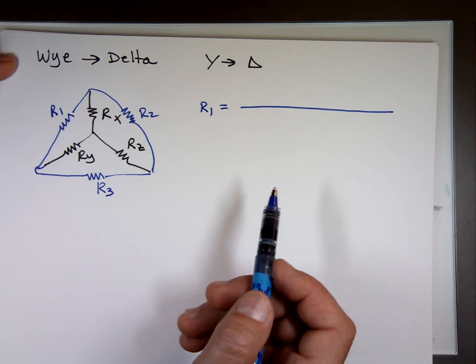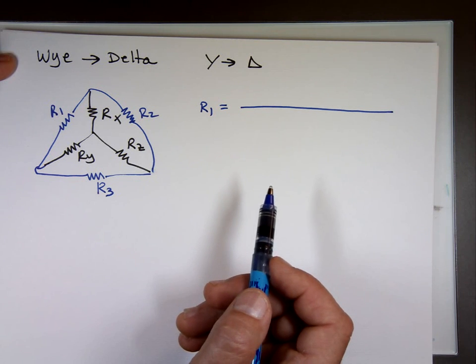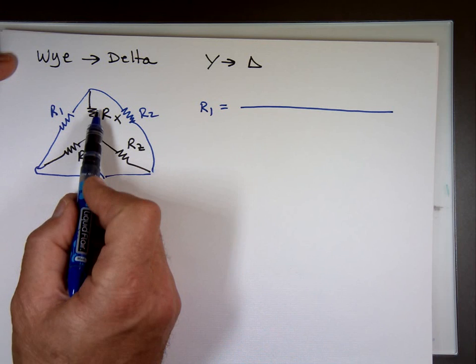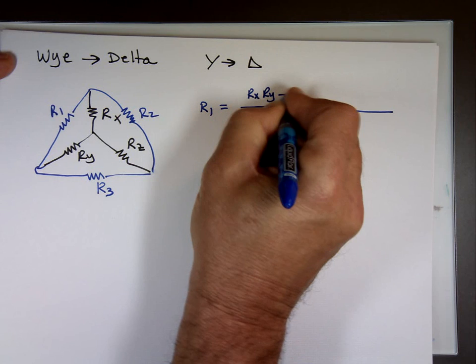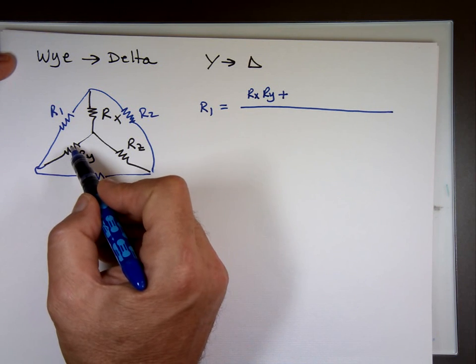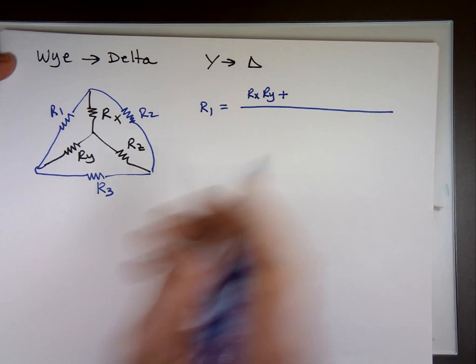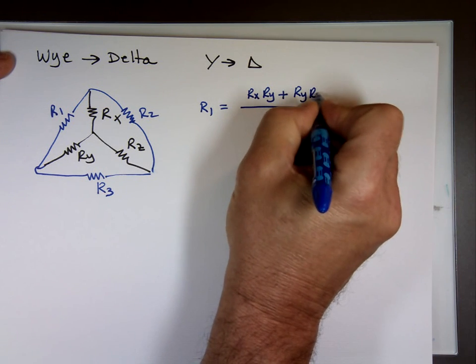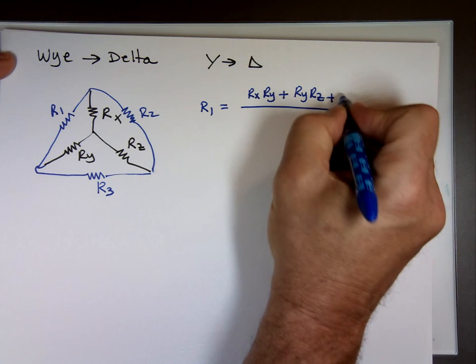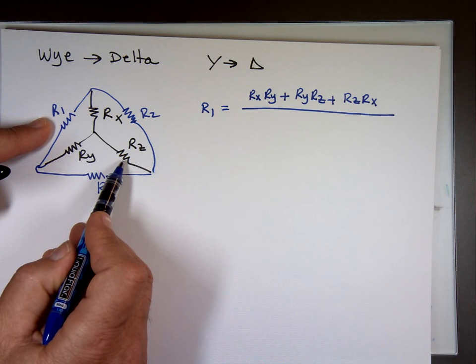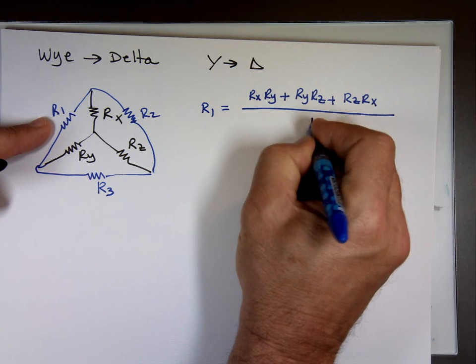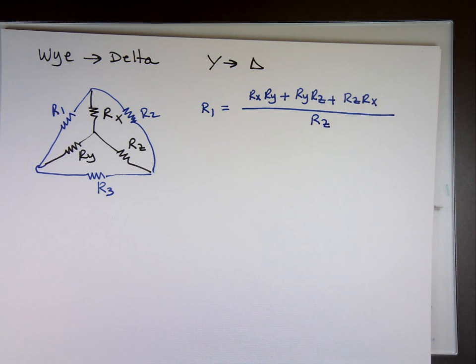Ready for the top? We're going to multiply. Here's R sub 1. It's going to be R sub X times R sub Y plus, so it's this times this, plus Y times Z, plus Z times X, divided by, here we go. Look at R sub 1. What's the resistor way opposite to R sub 1? R sub Z. That's what's going to go on the bottom.